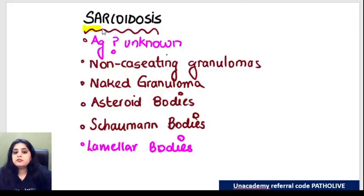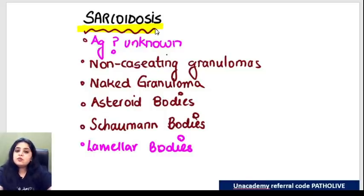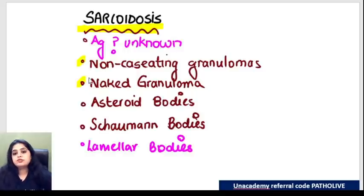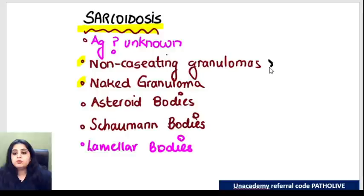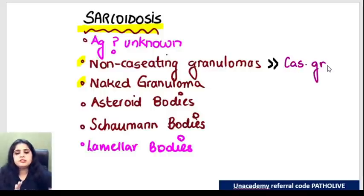The next disease is sarcoidosis, for which the antigen is still not known. When discussing granulomas, sarcoidosis shows two types. The most common granuloma in sarcoidosis is non-caseating. Both caseating and non-caseating can be seen, but the more common one is the non-caseating granuloma.